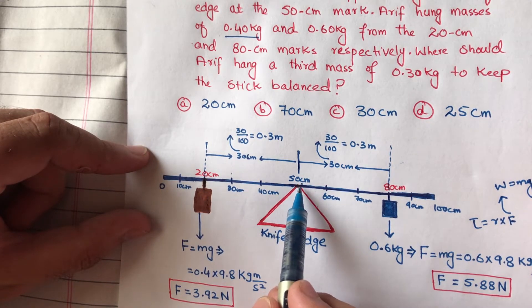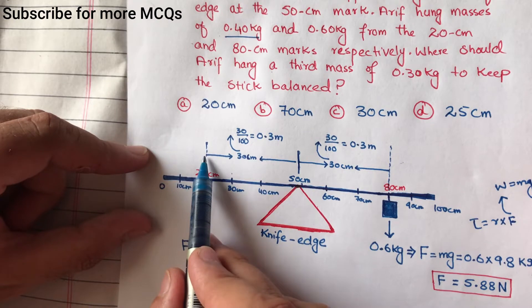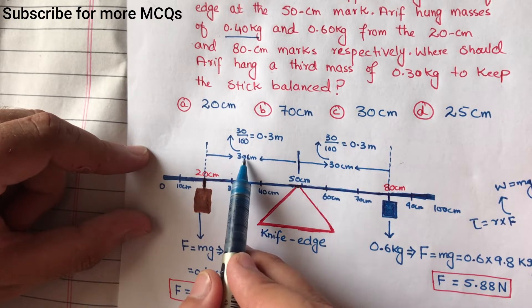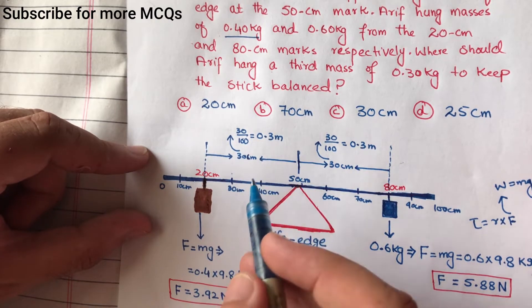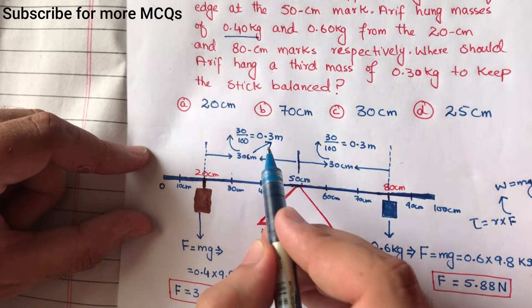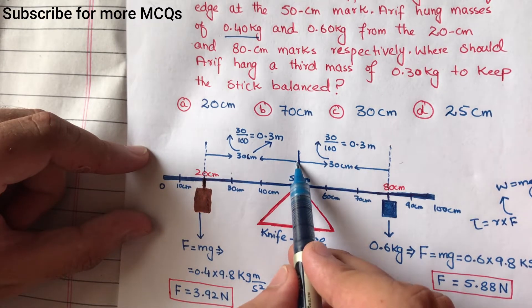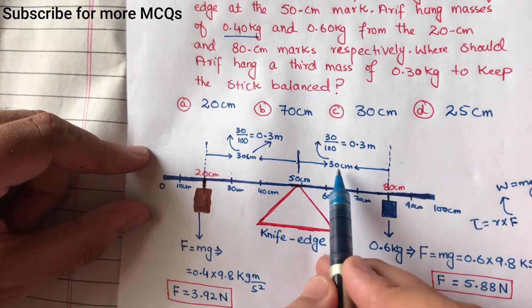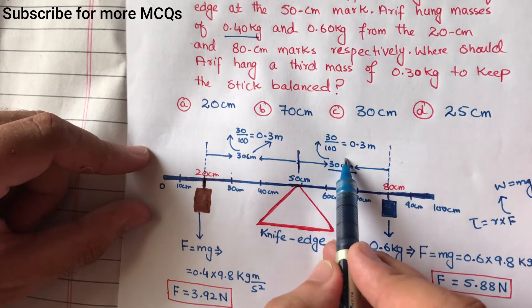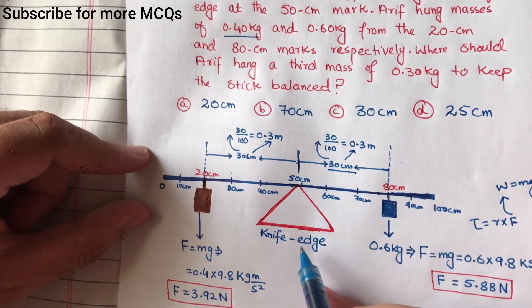Distance سے knife edge تک کتنا ہے — 50 centimeter ہے، اور اس mass کی یہاں سے 30 centimeter ہے۔ اس کو meter میں change کریں — 100 پر divide کریں تو 0.3 meter بن جائے گا۔ اسی طرح دوسری طرف سے بھی distance 30 centimeter ہے، یہ بھی 0.3 meter بن جائے گا۔